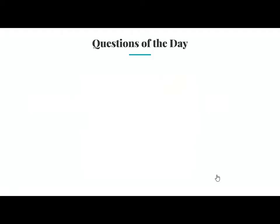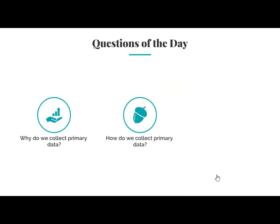These are the three main questions addressed in this chapter: Why do we collect primary data? How do we collect primary data? And how does data become useful information?